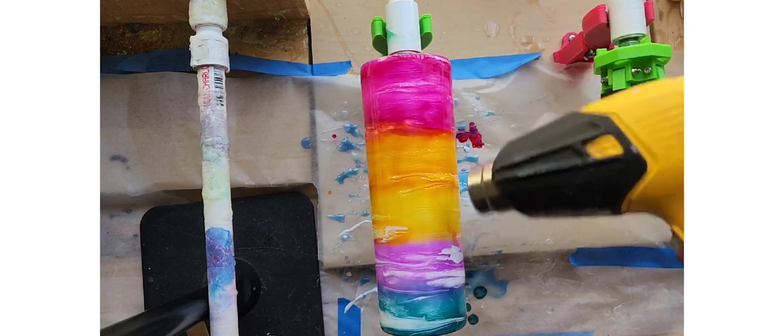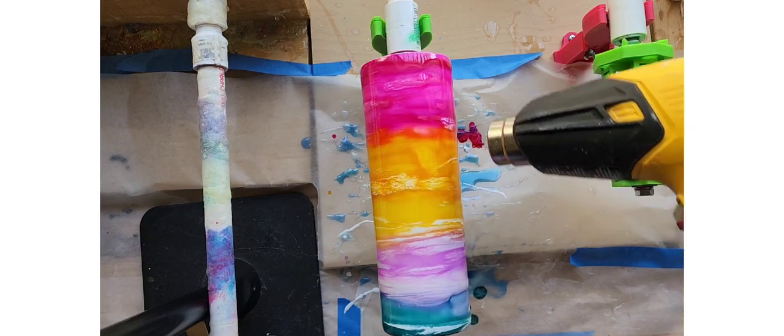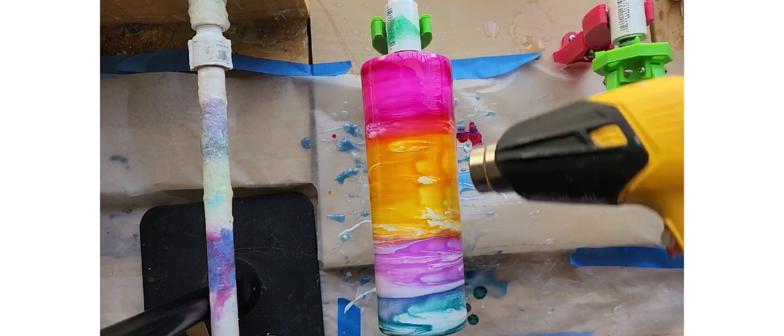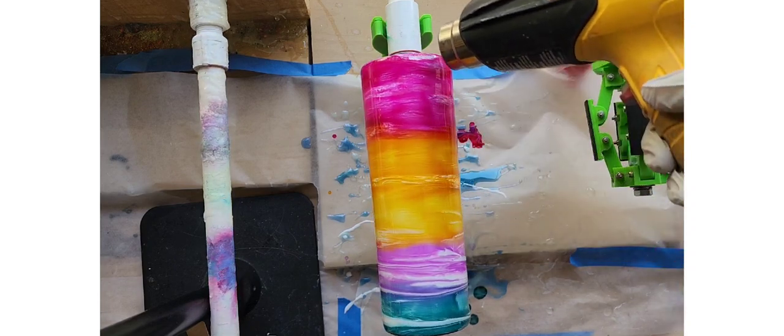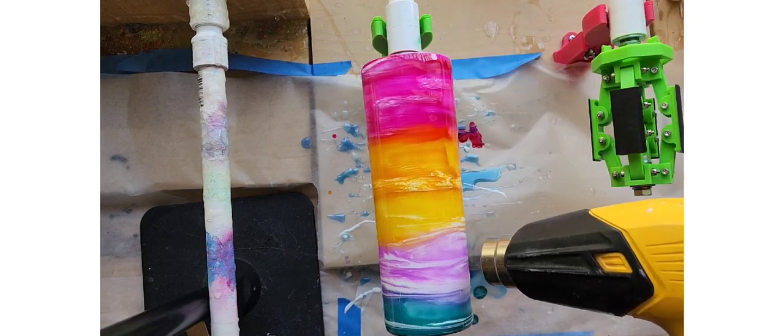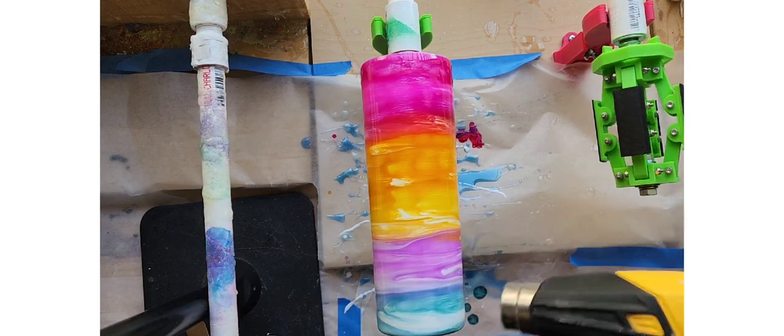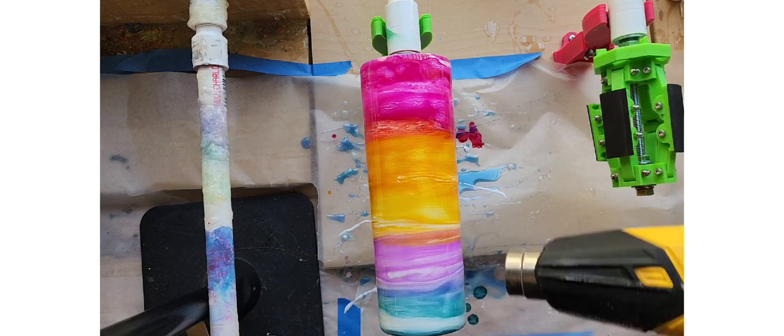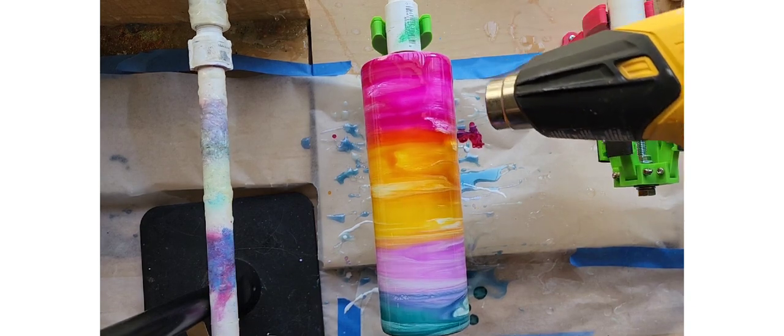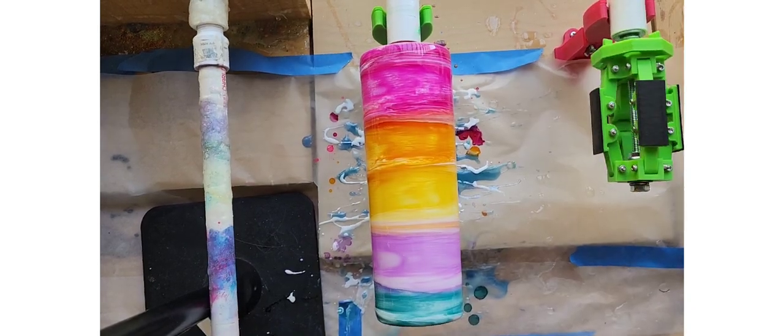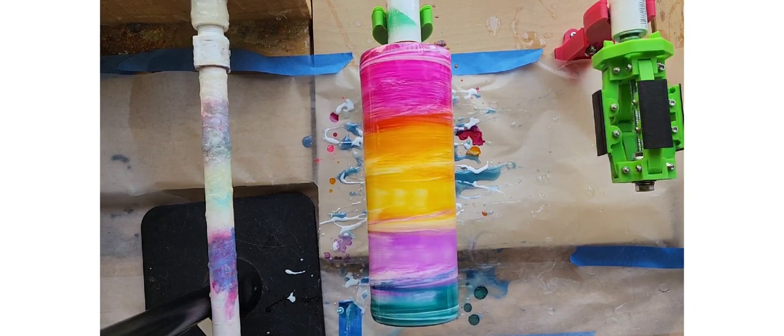We're gonna go in with the heat gun now and we are just gonna try and get all of these colors moving. You just want to keep the heat moving so that it doesn't give too much heat in any one spot. There's a lot of white down there on that purple, so I'm probably gonna add a little more purple, possibly see if I can break it up.